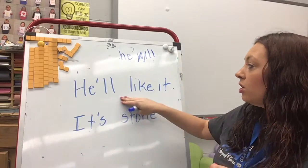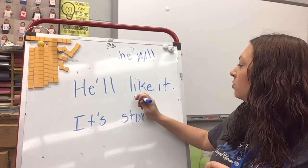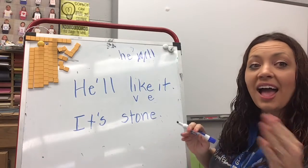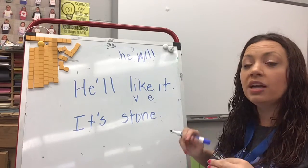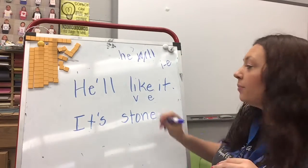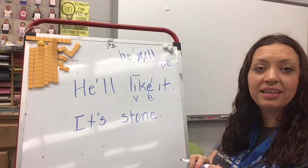So he'll, and then we have this word. What do we notice about this word? What are our vowels? We've got a vowel and then we have an E. So that's that I consonant E. When I have that I consonant E pattern, I'm going to make that long I and then that's going to be a silent E.